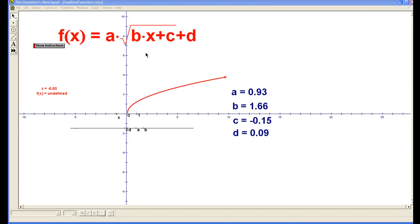Again, in red, we have our function, and in blue we have the values of a, b, c, and d. We're able to change these values by using the slider below.